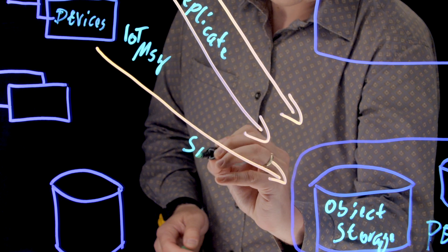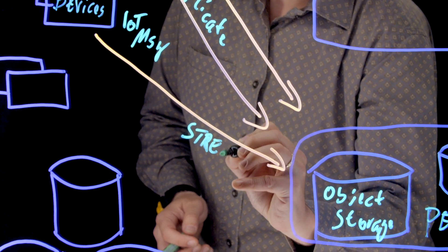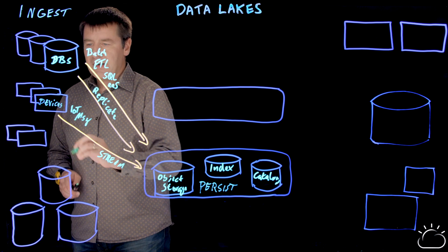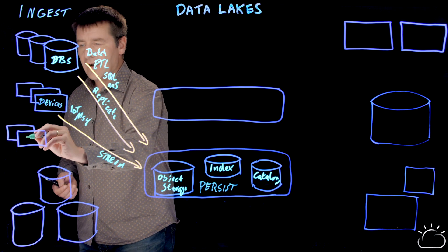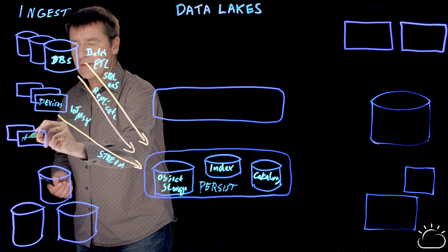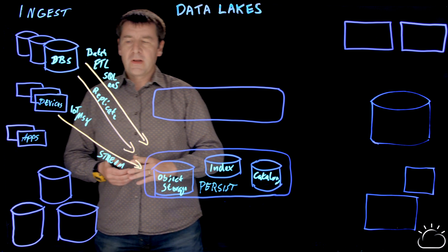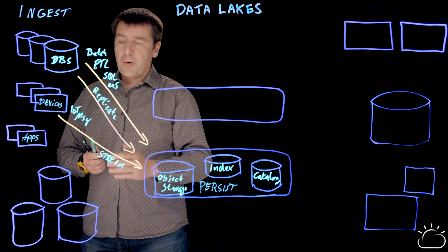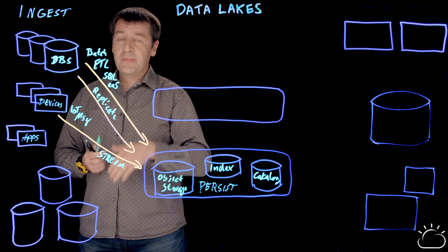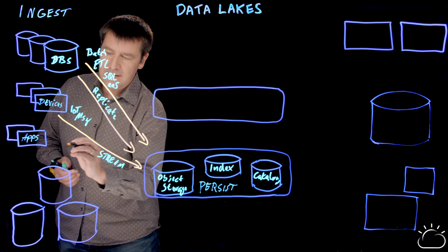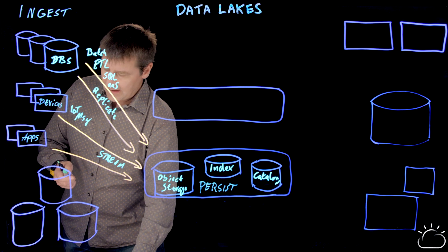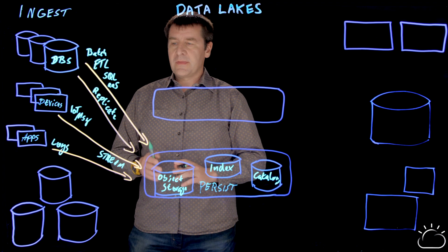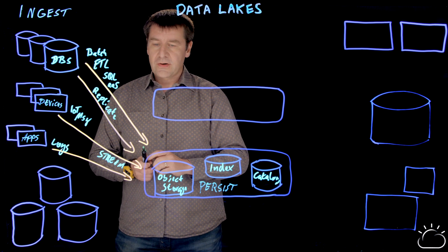This IoT data needs to land and be streamed into the data lake, so here we are talking about the streaming mechanism. Similarly, we have data originating from applications running in the cloud, or services used by your applications. They are all producing logs, which is very valuable information, especially for operational optimizations and gaining business insights of user behavior. This data also needs a streaming mechanism to get streamed and stored in object storage.